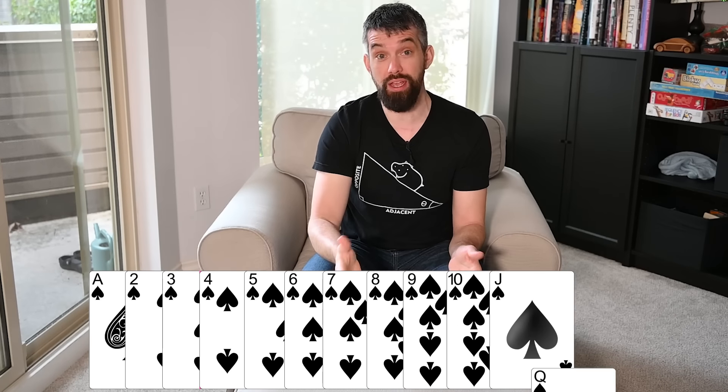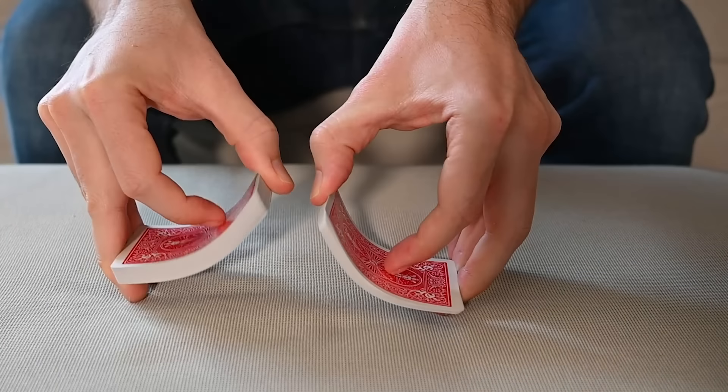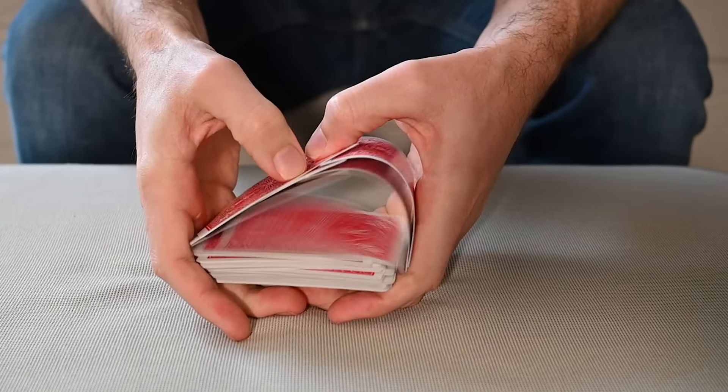This deck of cards is in a perfect ascending order. It's ace through king of all four suits. But the question is, how many times would I have to shuffle this deck of cards until I got an outcome that was truly random?